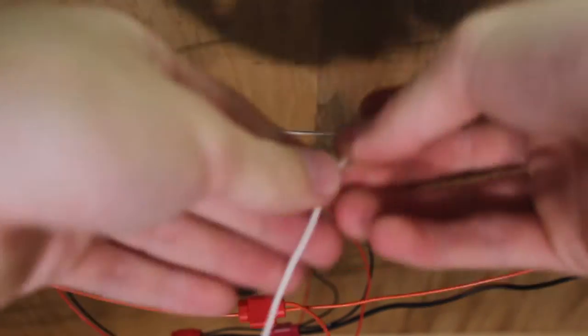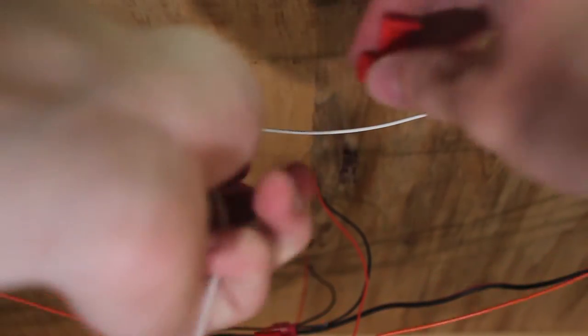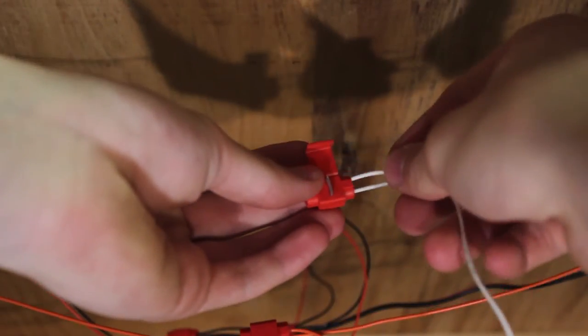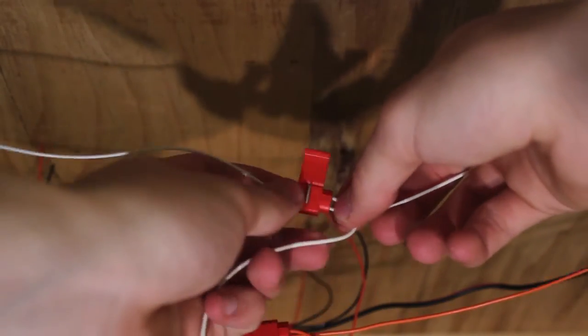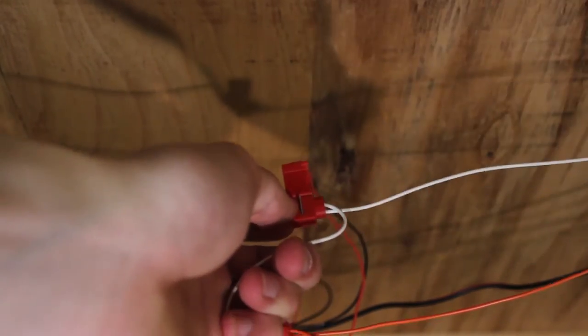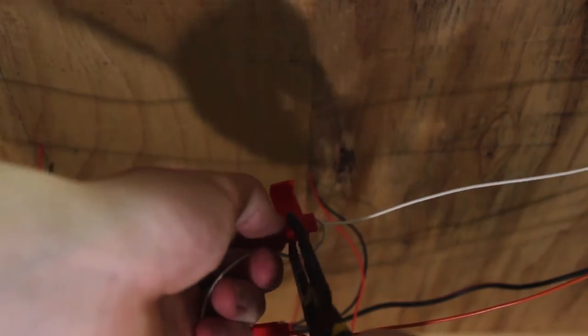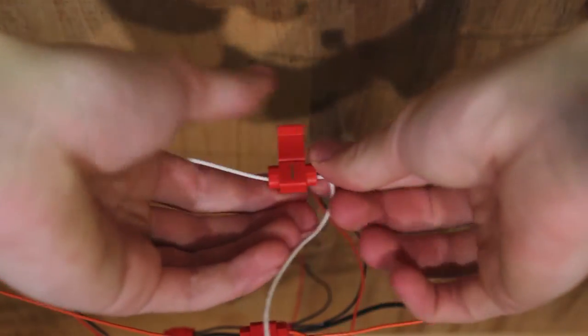We'll go ahead and take our white wire here on my other suitcase connector and put that on. Run it through and then crimp this down. It's pretty simple getting this installed.